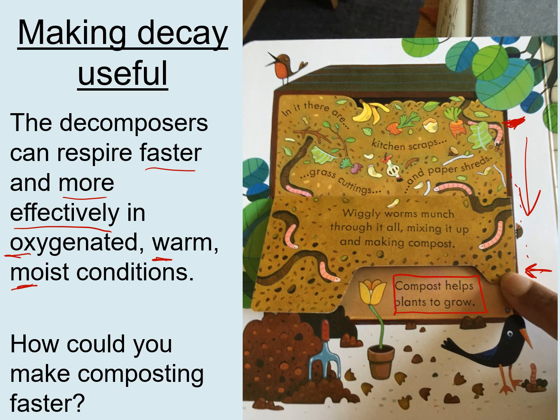If compost heaps have worms in them, the worms move through the compost and make little tunnels and gaps, which allows air to flow through — so having lots of worms is good. Having it warm is also beneficial. On a large industrial scale, you can kick-start the process by warming it up, and once insulated, respiration releases heat itself — it's exothermic — so it keeps itself warm.